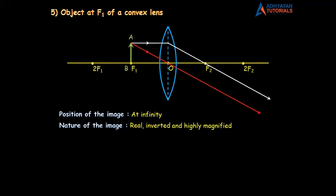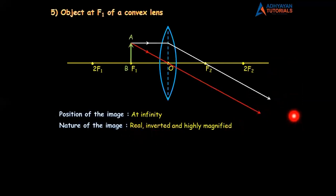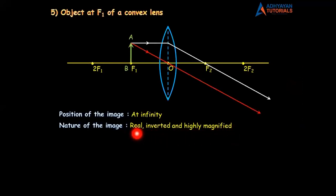To summarize how to find the nature here: the rays are going down and the image is inverted. Because the image is inverted, it is real. And because as we go further and further, the size of the image becomes bigger and bigger — the image is highly magnified. So the nature of the image is real, inverted, and highly magnified. Children, you will not draw this diagram right now. You will draw this diagram as your homework. Click a screenshot of this picture first.